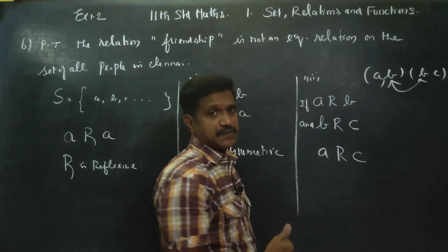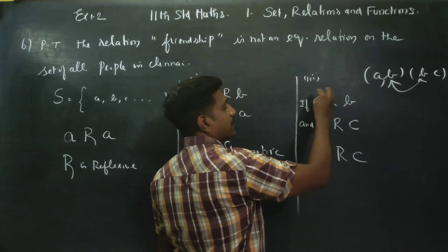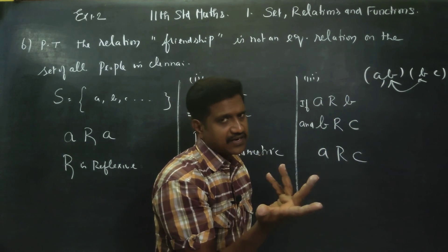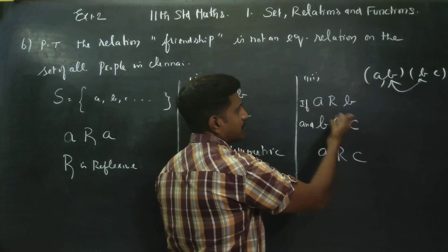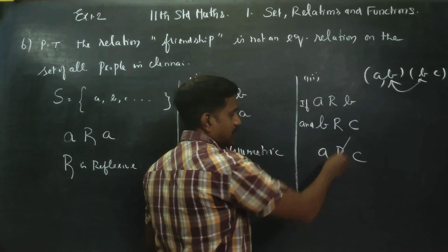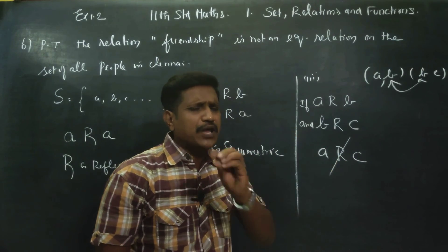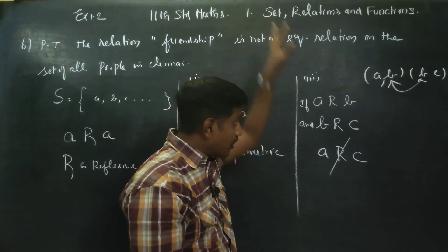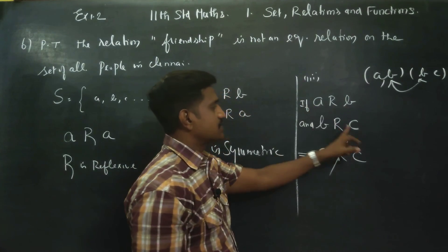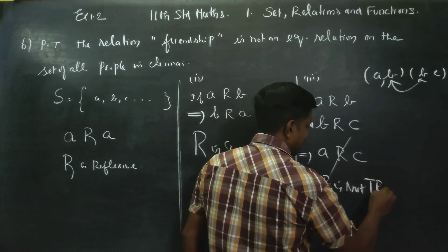Consider: if you are a classmate in school, and you work in the same office, you may have a connection with your classmate. But if A knows B as a school friend and B knows C as an office friend, A is not necessarily related to C — this is a peculiar situation. Therefore, A is not necessarily related to C, and R is not transitive.